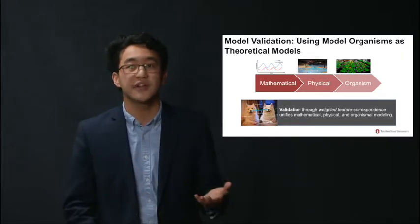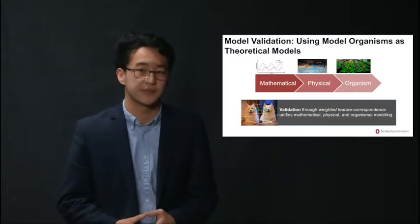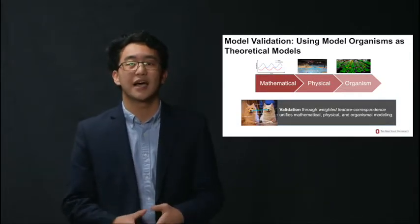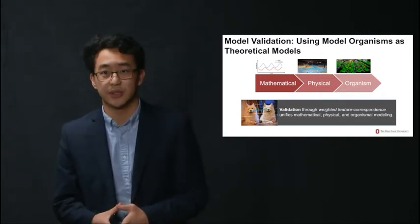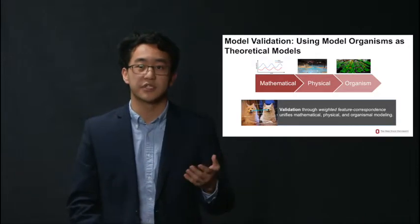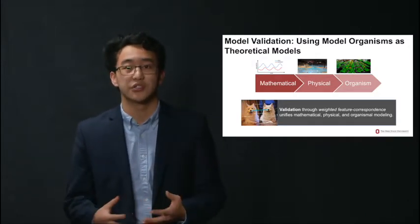So, I propose a new improved account of model validation called weighted feature correspondence. In doing this, scientists give certain weights to features that they deem more important in the model to target relationship. Not only is this more philosophically supported, this is also more accurate to how scientists use models.